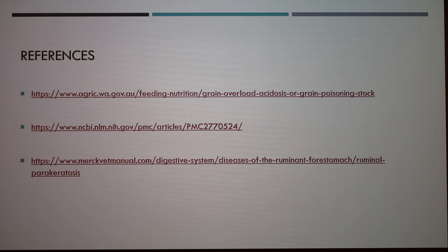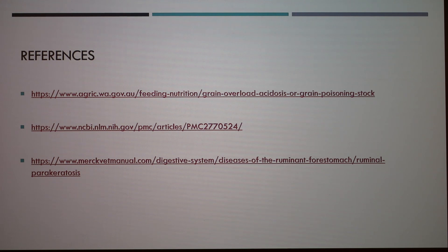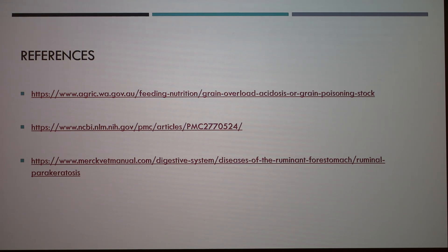In a herd, some animals may suffer more than others depending on how well feed rations are mixed — animals at different parts of the feed bunk may receive different rations, leading to variable severity of the condition. You can also observe bloat on the left side, where gas accumulates, which can signal paracarotosis due to the increased gas production. The rumen villi are necessary to absorb nutrients, particularly volatile fatty acids.